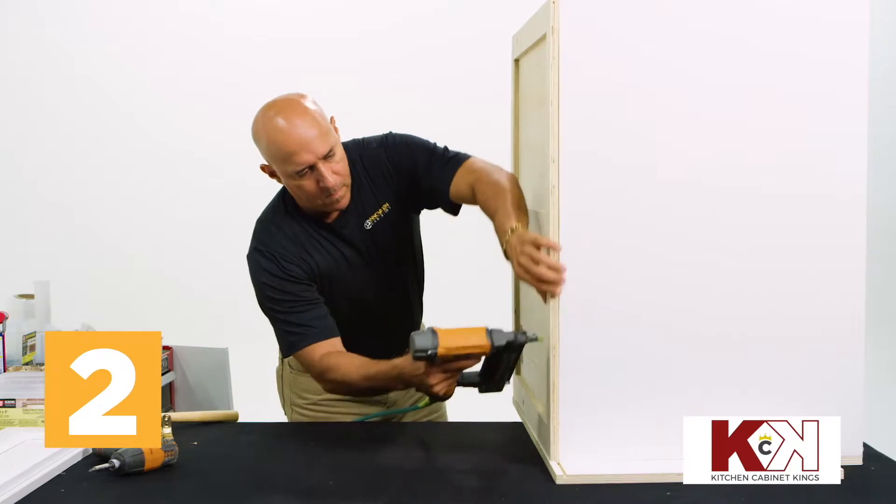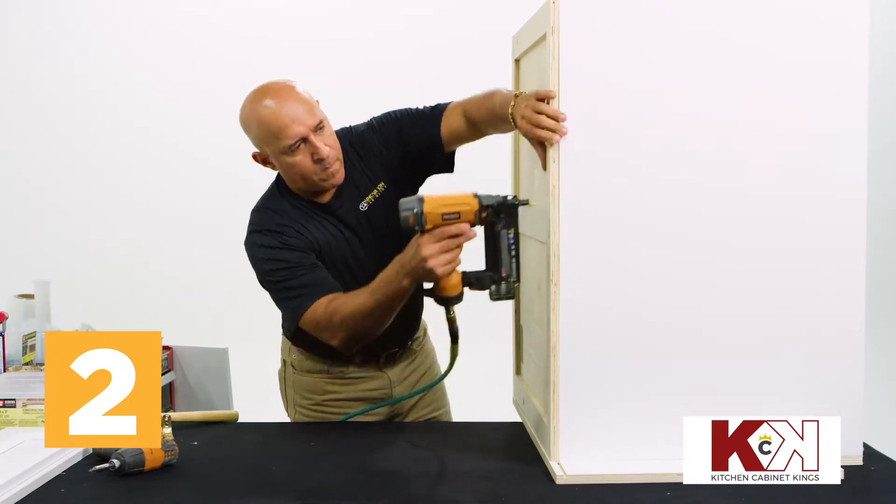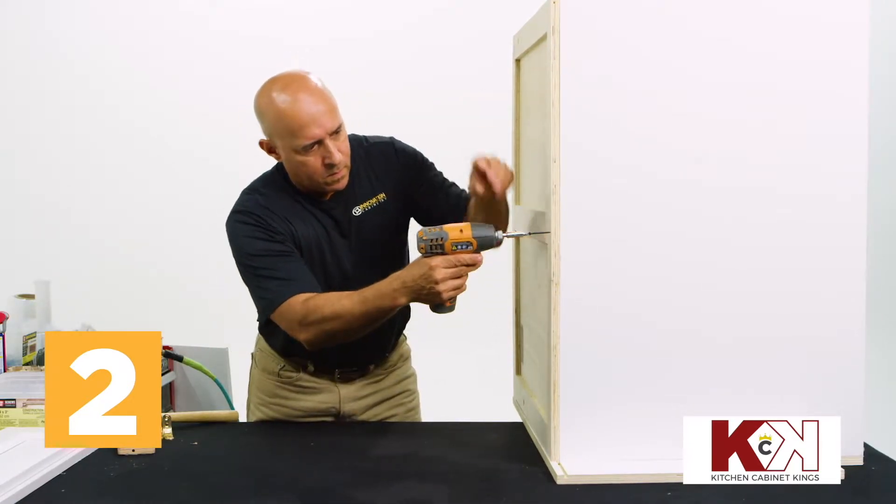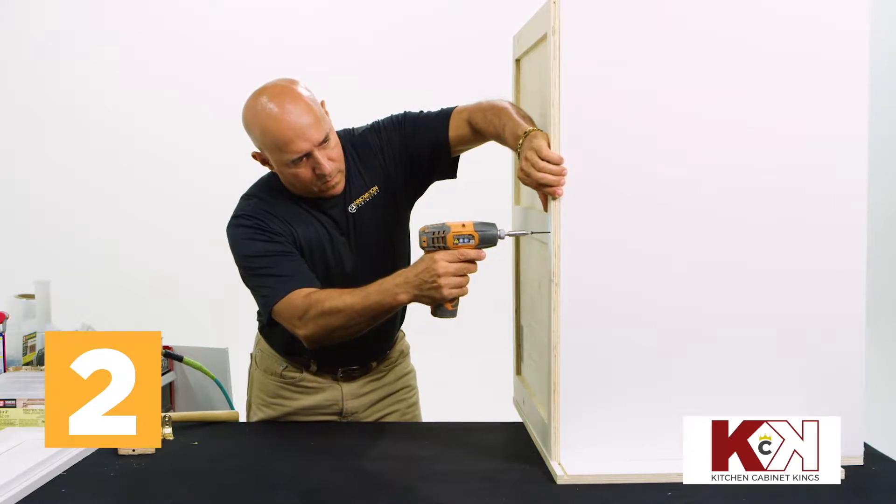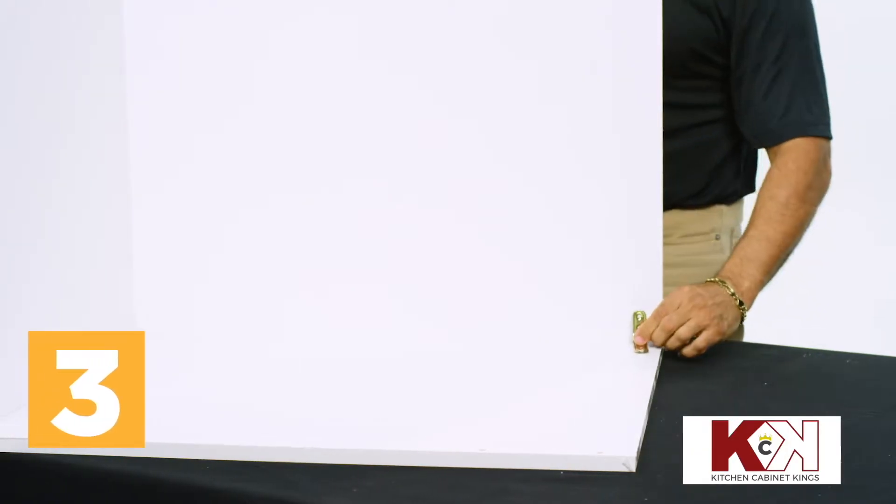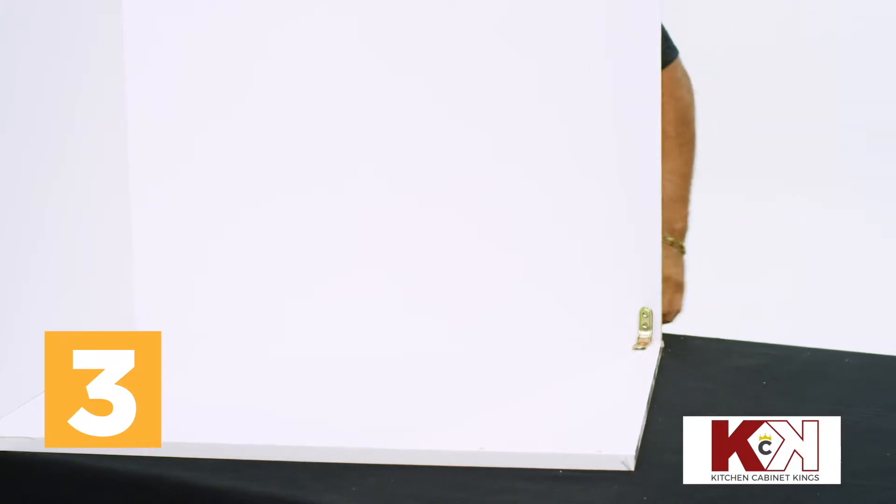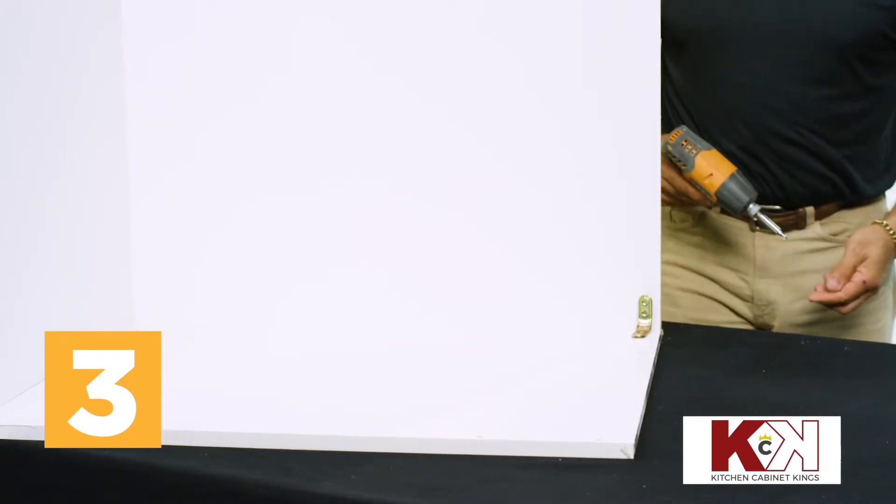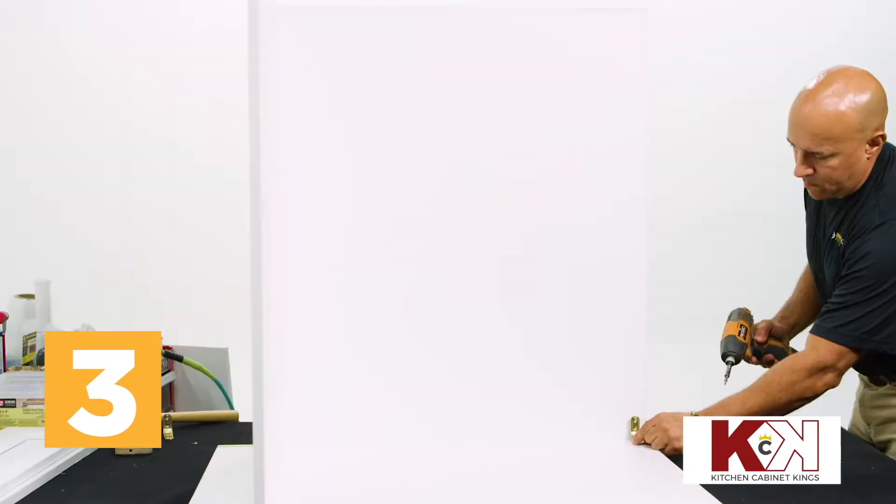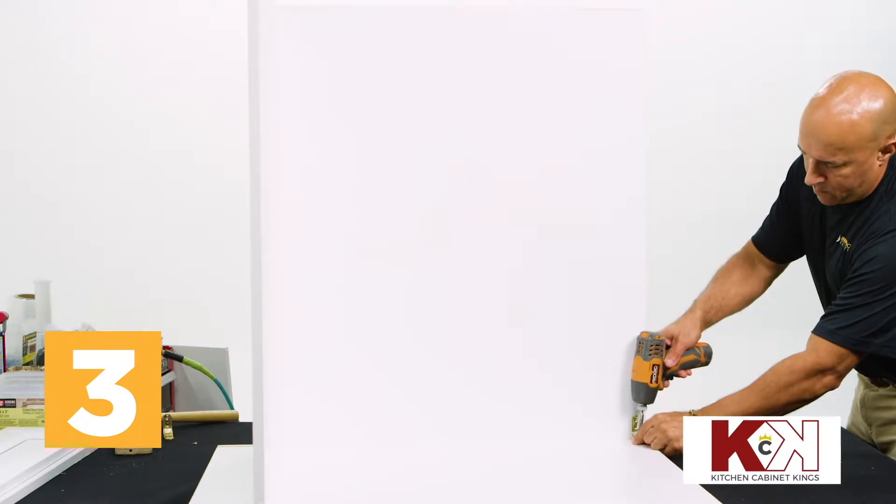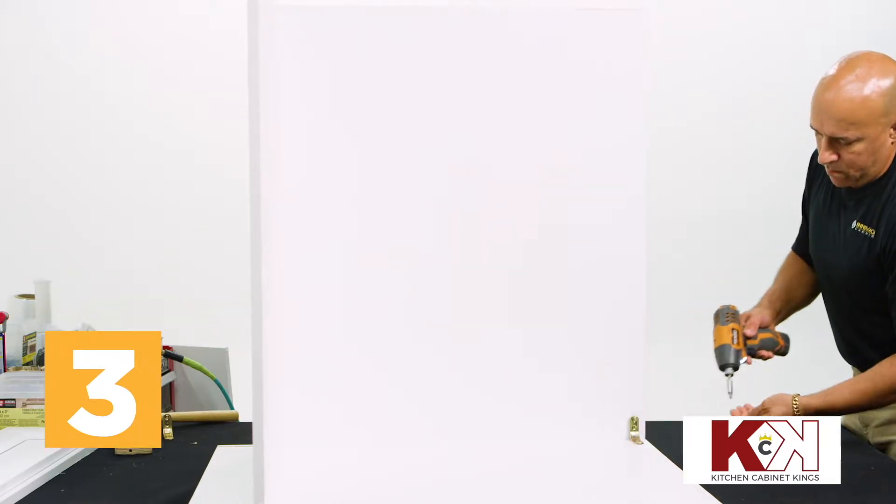Secure where the bottom and backing meet, first with a nail gun, then with a drill and drywall screws. With the sides still flat on your workstation, take one of the corner brackets and place it against the side and backing, in the corner opposite the bottom panel, then secure with the drill and prepackaged screws.